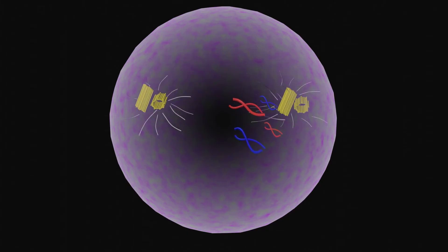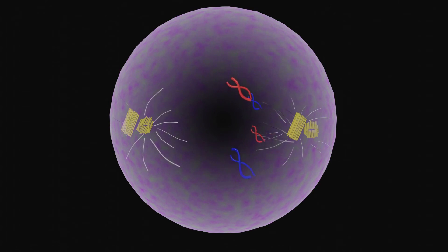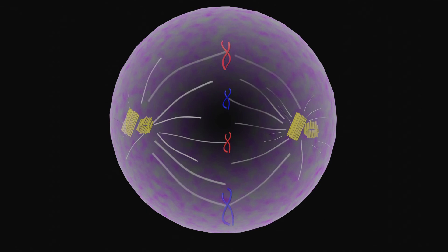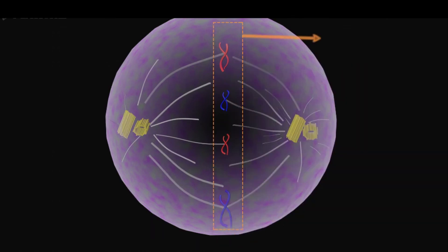At metaphase stage, the microtubules start pulling the chromosomes with equal force and the chromosome ends up in the middle of the cell. This region is known as the metaphase plate.